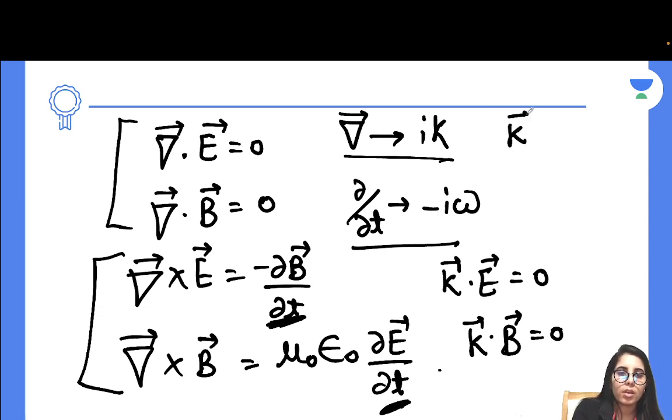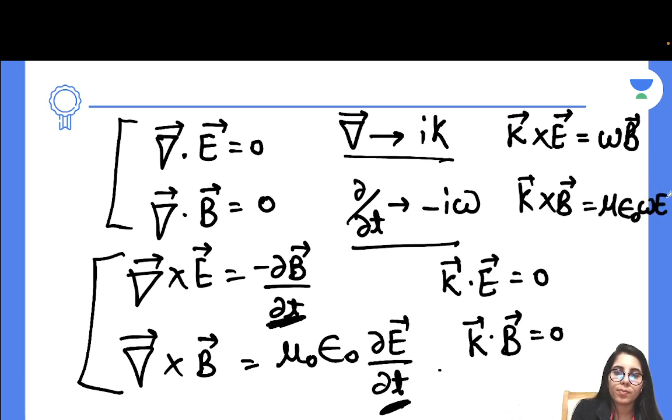The third one will become K cross E equals omega B. That's negative, negative, positive - iota gets simplified. Next one will become K cross B equals mu naught epsilon naught omega E. You can see how simply you have got the new equations and how simple and easy it is for you.